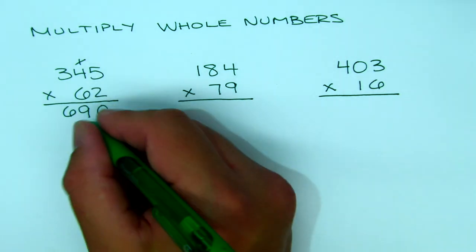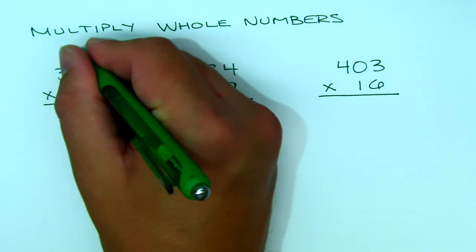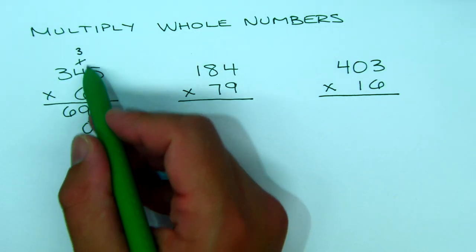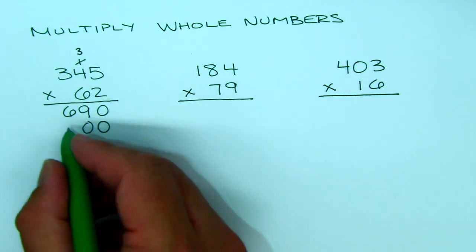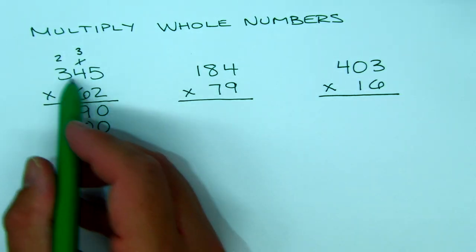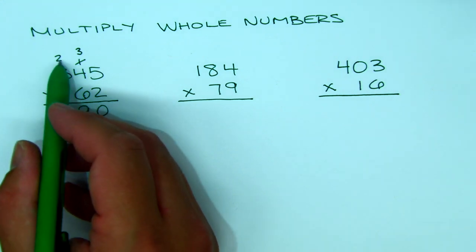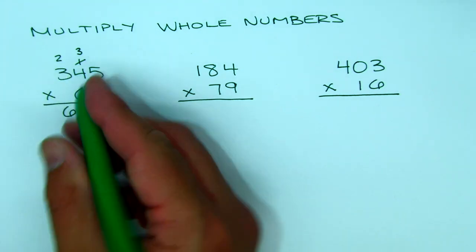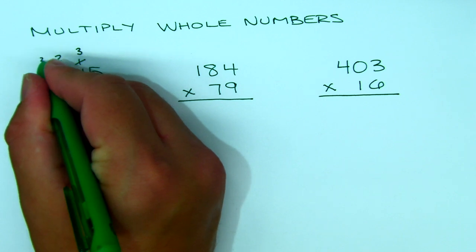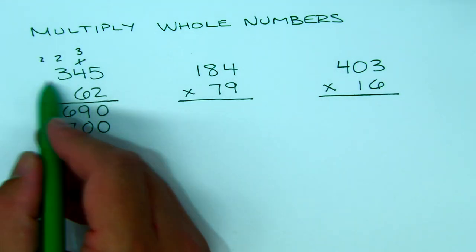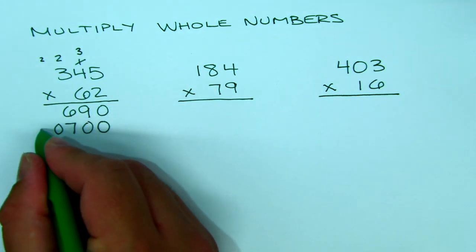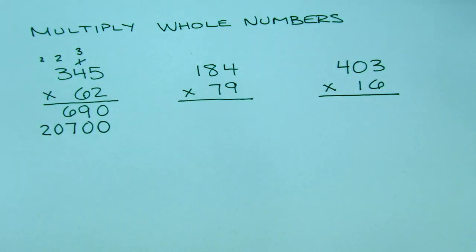6 times 5 is 30: 0 goes down, 3 goes way up. 6 times 4 is 24, plus 3 is 27: 7 goes down, 2 goes up. Then 6 times 3 is 18, plus 2 is 20. The 0 goes down and technically the 2 goes up, but since it's 6 times nothing in the thousands place, most of us just put the 2 straight down.